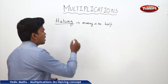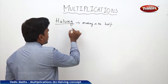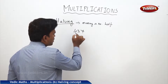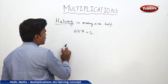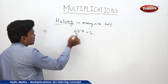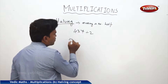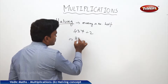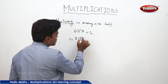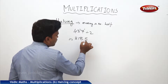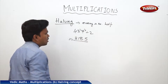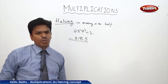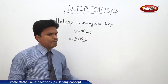Let us take an example. Suppose I want to divide 437 by 2. Simply what I am going to do — I will simply half this number. 2 goes 2 times into 4, 1 time into 3 with 1 remainder, then 2 as of 16 with 1 remainder, giving 0.5. So 437 by 2, how we got: 218.5.